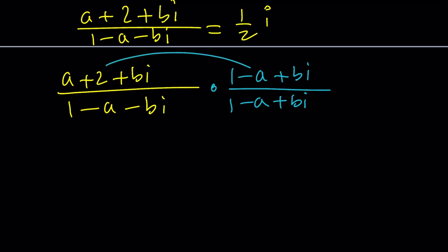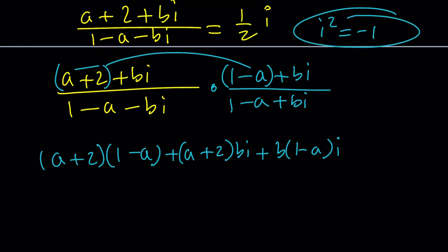So A plus 2 plus B I over 1 minus A minus B I, and I want to multiply it by 1 minus A plus B I over the same thing. Now we're going to distribute here, but be careful. Keep the real part together, and then multiply them all together. So A plus 2 multiplied by 1 minus A is going to be the first part. Then I'm going to multiply A plus 2 by B I. And now I'm going to multiply B I times 1 minus A. And B I times B I is B squared I squared. I squared equals negative 1. That's going to give me minus B squared, the whole thing.